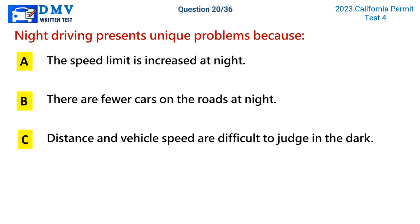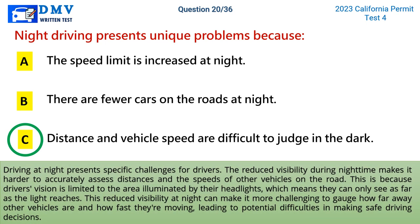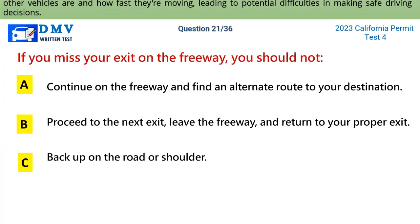Question 20: Night driving presents unique problems because. A) the speed limit is increased at night, B) there are fewer cars on the roads at night, C) distance and vehicle speed are difficult to judge in the dark. The correct answer is C. Driving at night presents specific challenges — reduced visibility makes it harder to accurately assess distances and the speeds of other vehicles. Drivers' vision is limited to the area illuminated by their headlights, making it more challenging to gauge how far away other vehicles are and how fast they're moving.